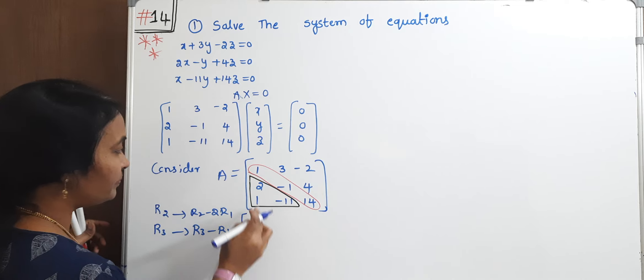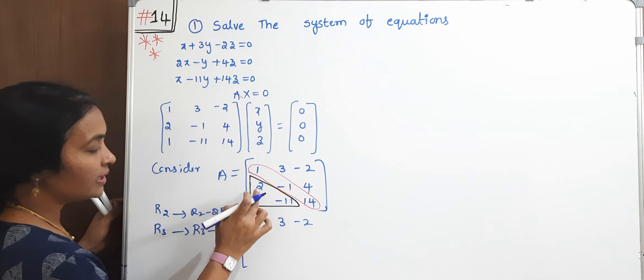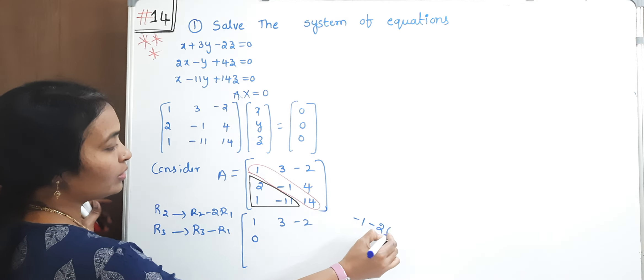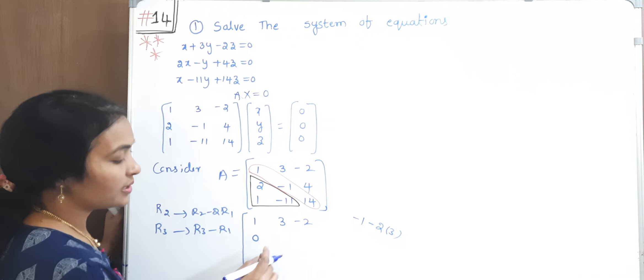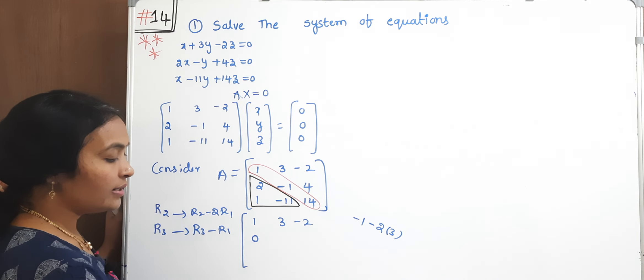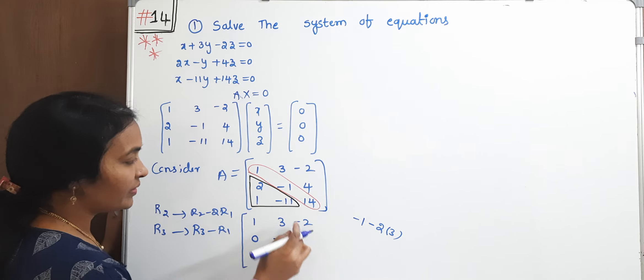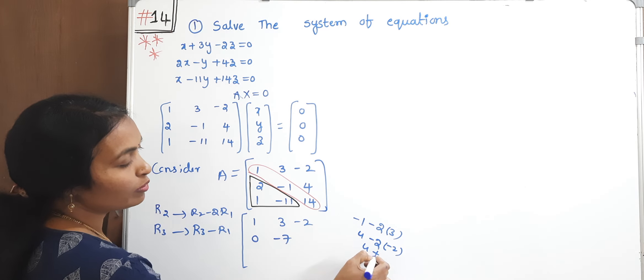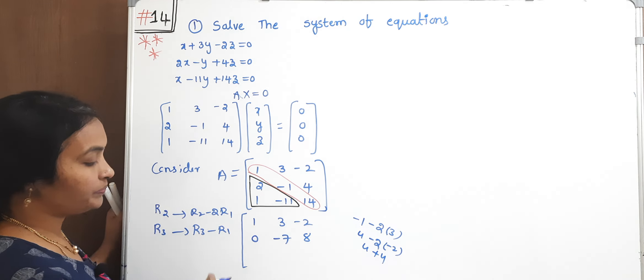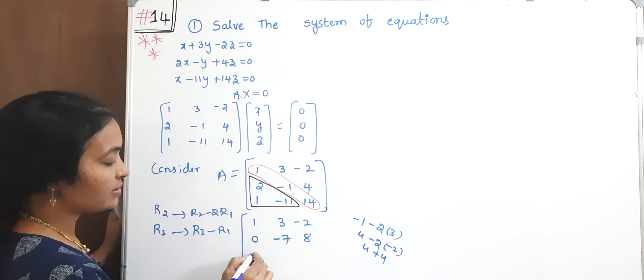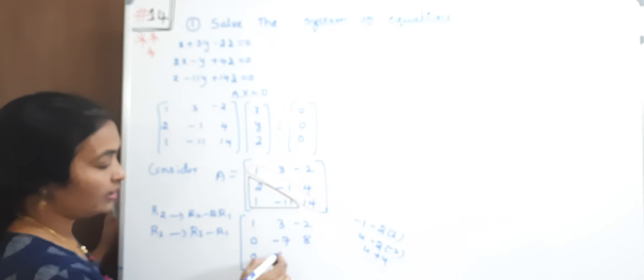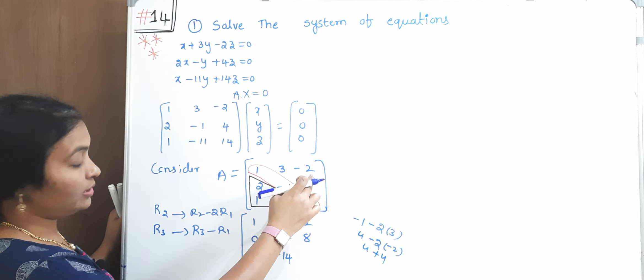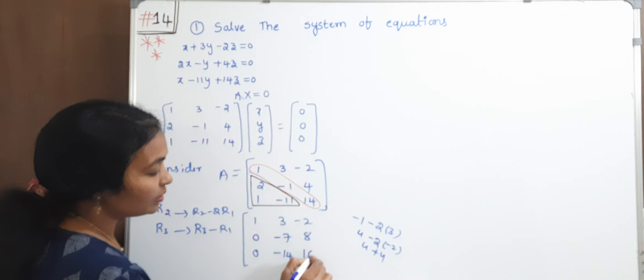First row as it is. Second, 2 minus 2 times 1 is 0. R2 minus 2 into R1, -1 minus 6 is -7. Next, 4 minus 2 into R1, -2 minus -2 plus 4 plus 4 is 8. Next, for row 3, this minus this is 0. -11 minus 3 is -14. Next, 14 minus -2 is 16.